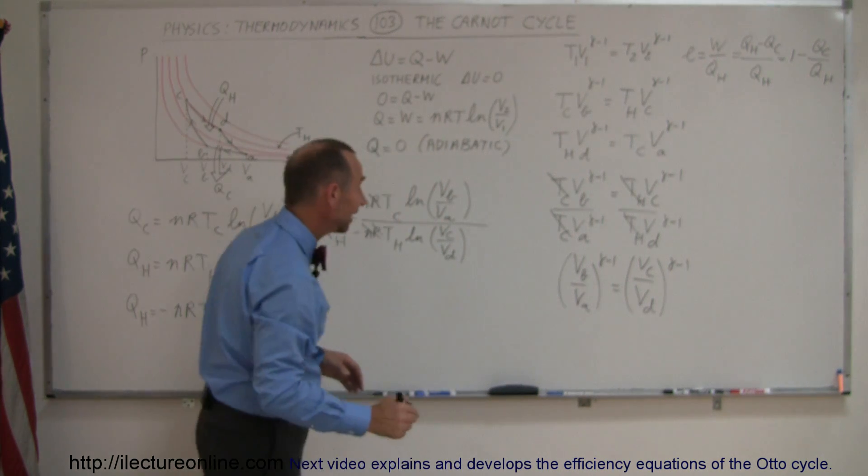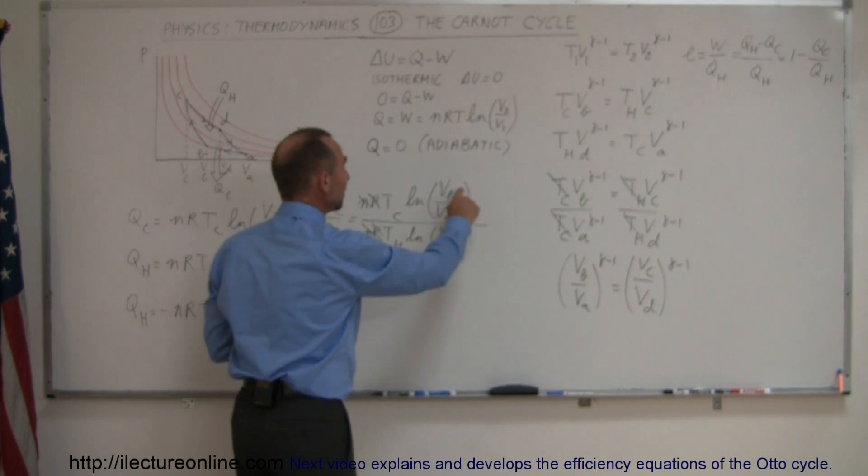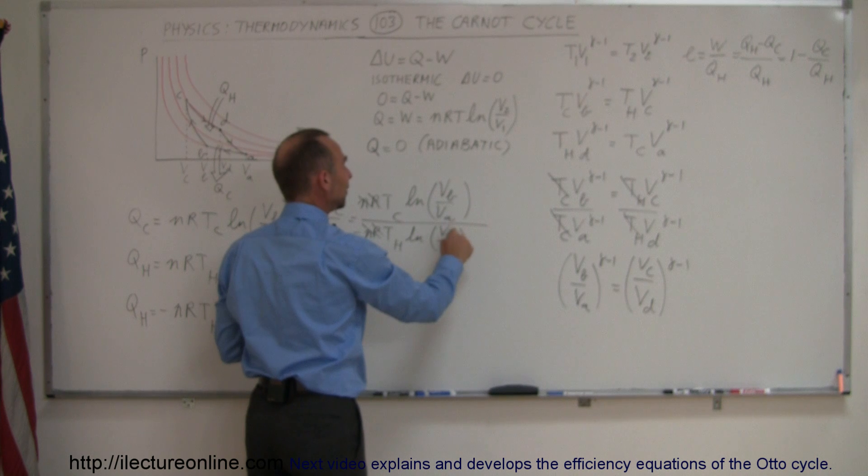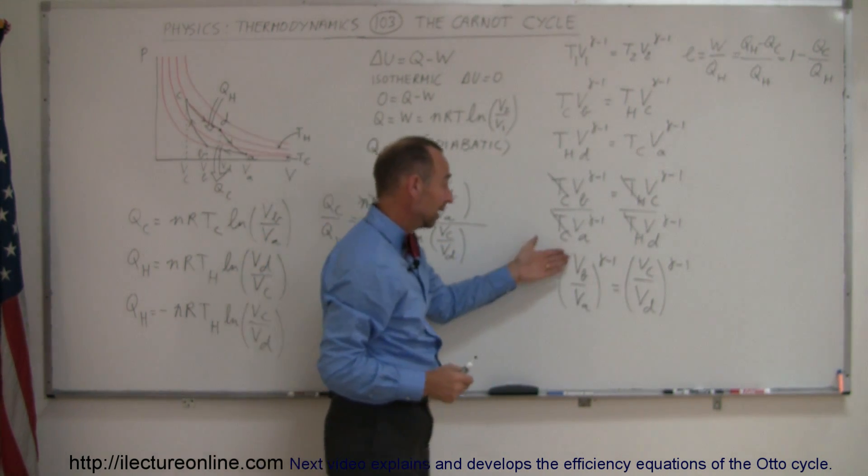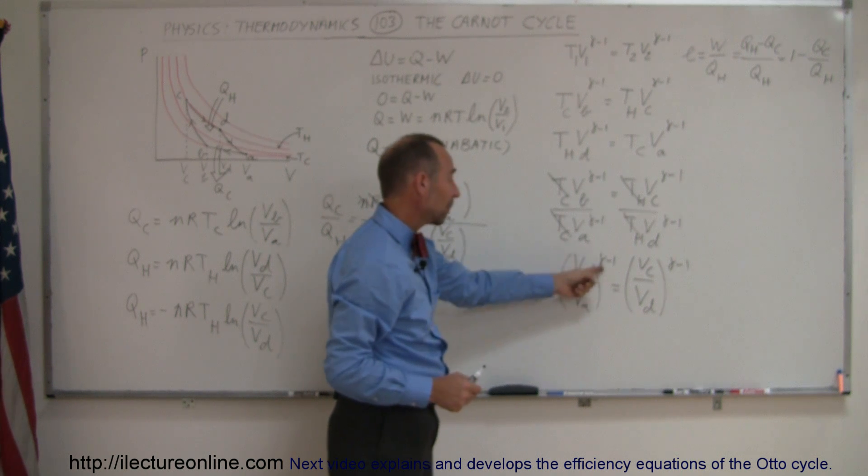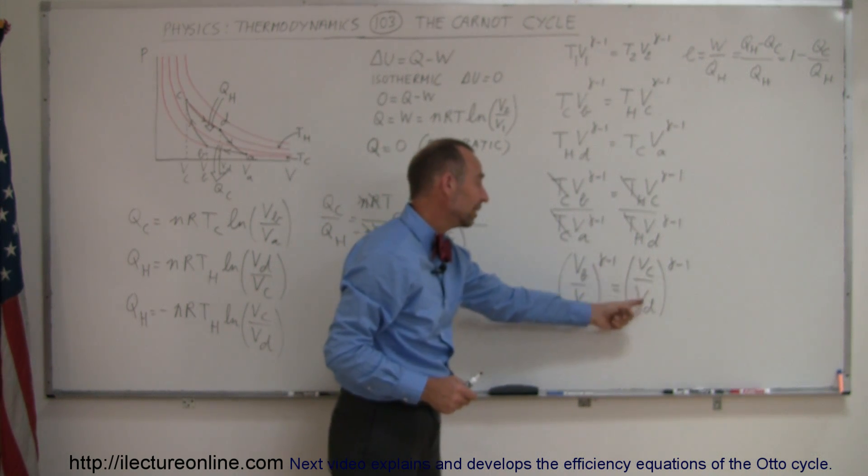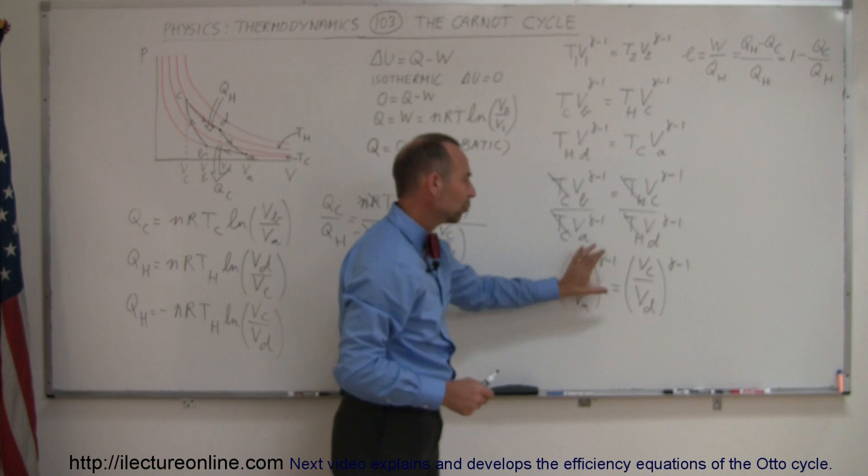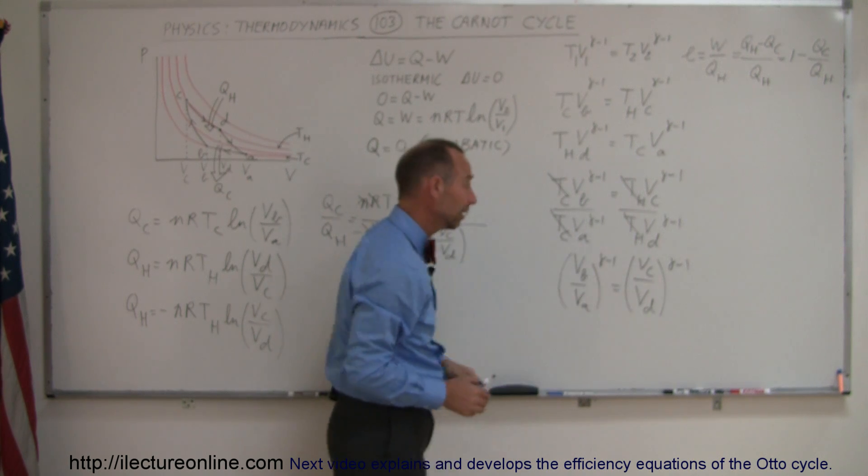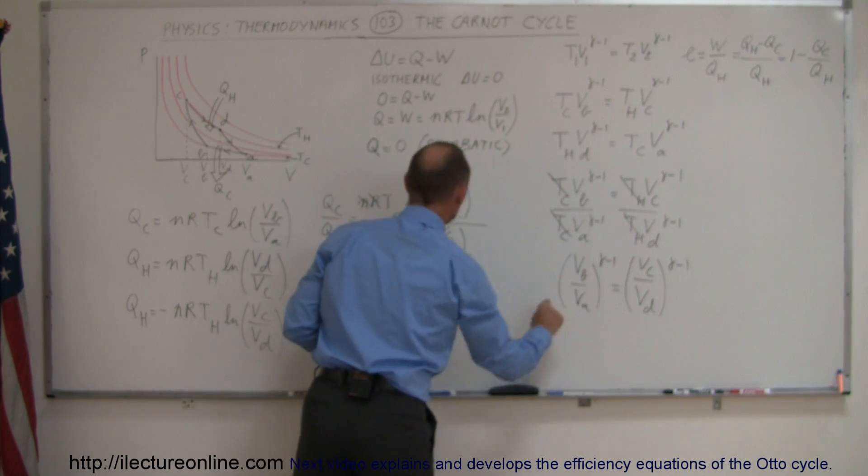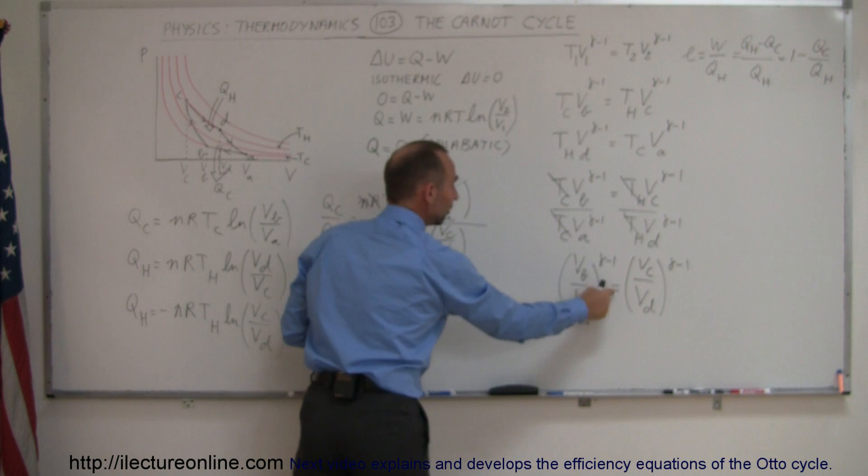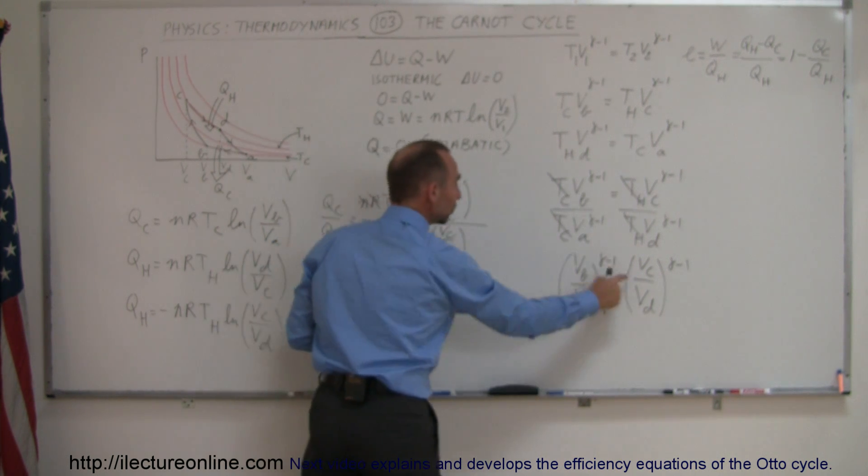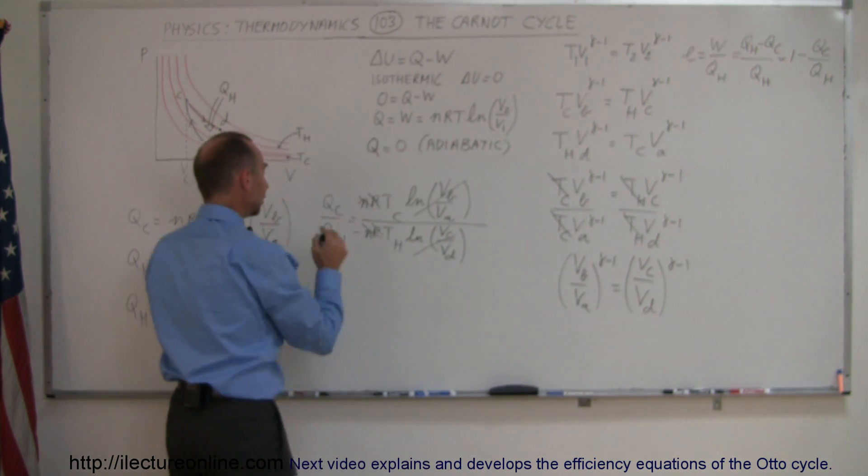Now, why did I do that? Well, take a look at this equation again. I have V_b over V_a, and I have V_c over V_d, which is exactly what I have over here. And you could say here, then, that if V_b over V_a to the gamma minus 1 equals V_c over V_d to the gamma minus 1, that these ratios have to be equal to each other. If those two ratios have to be equal to each other, then this has to be equal to that, and those cancel out, because V_b over V_a is equal to V_c over V_d.